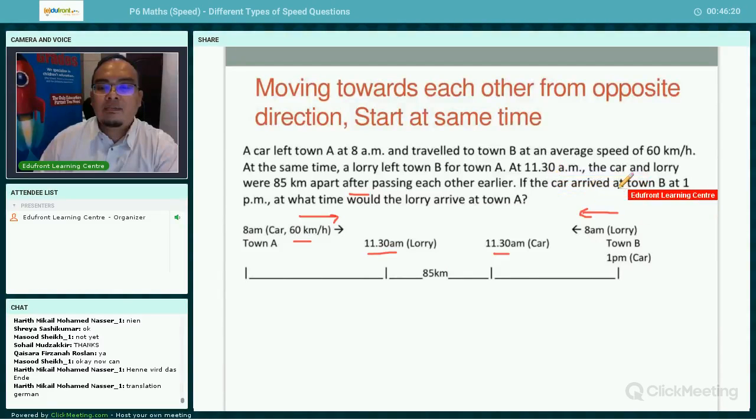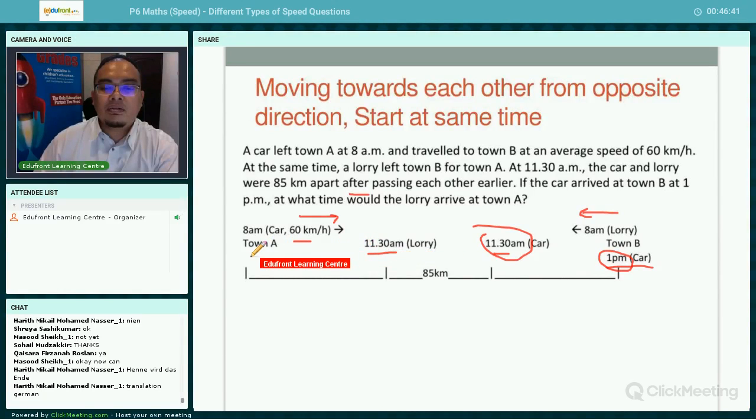So the question is, if the car arrived at town B at 1 p.m., the car, you can see, arrived from here, 11:30 a.m. Now, the car reached town B at 1 p.m. At what time would the lorry arrive in town A? We want to know what time that lorry reached town A.